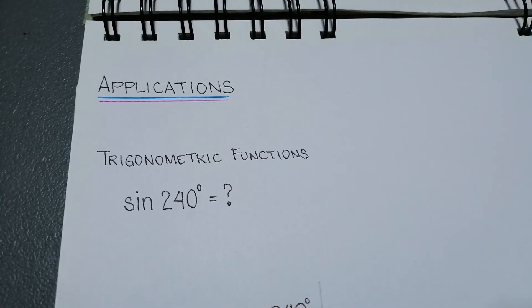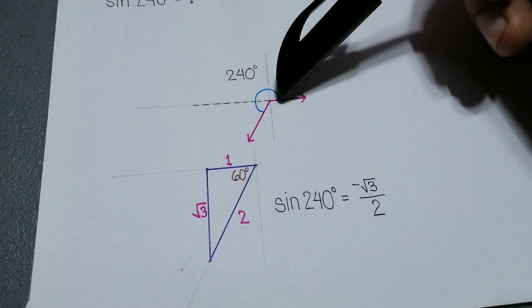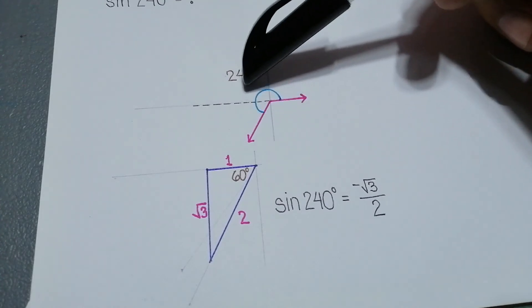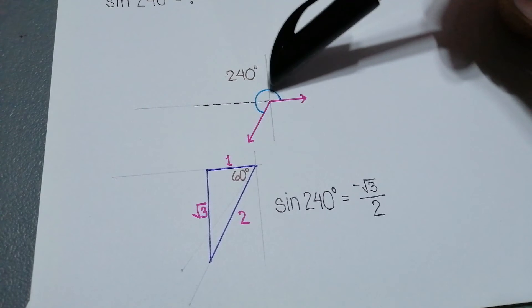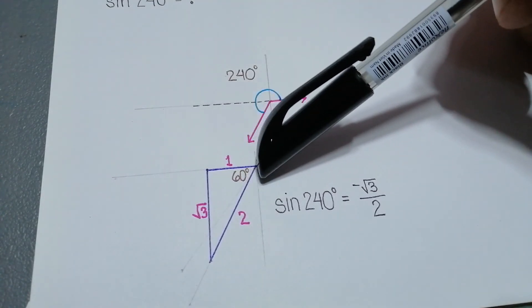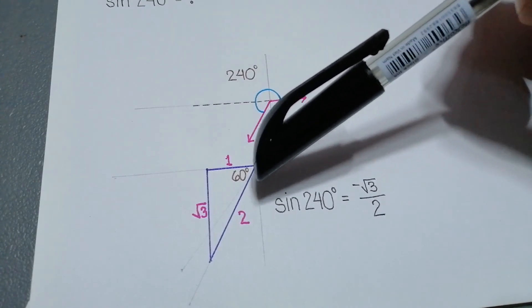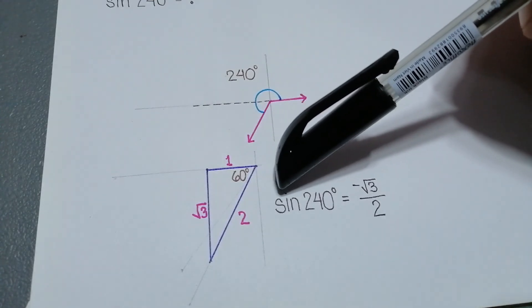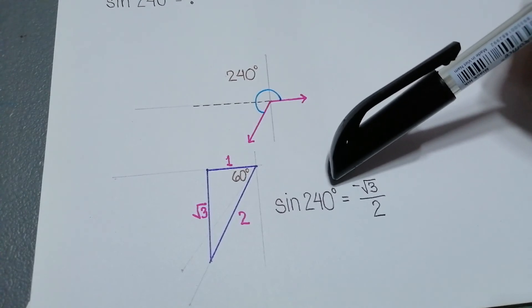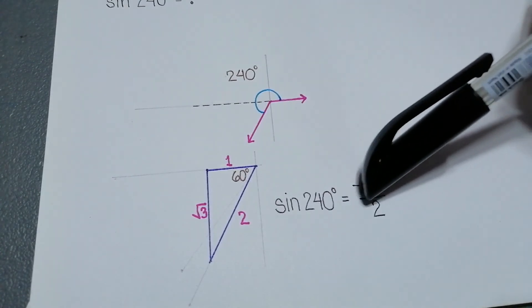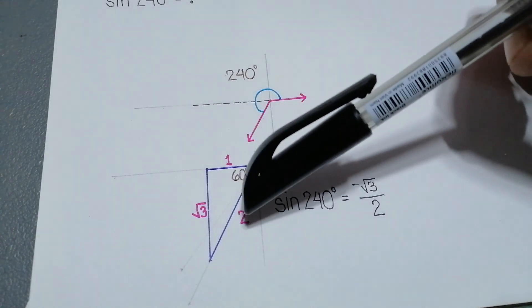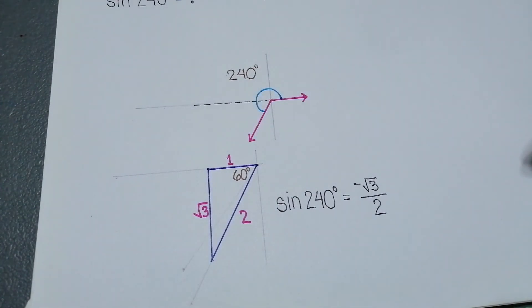Here are some applications of reference angle. We can actually use the reference angle to determine the value of a trigonometric function. For example, determine the value of sin 240 degrees. Using the graph, we can determine what is the equivalent reference angle of 240 degrees. The reference angle for 240 degrees is 60 degrees, and that is on the third quadrant. Using the special 30-60 right triangle, we can determine the value of sin 240 degrees, which equals negative √3 over 2, given the values of each side of the 30-60 right triangle.